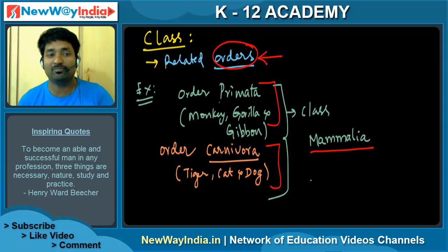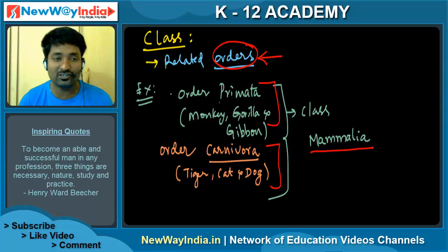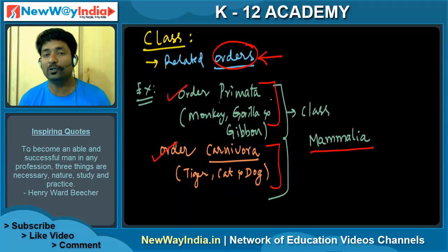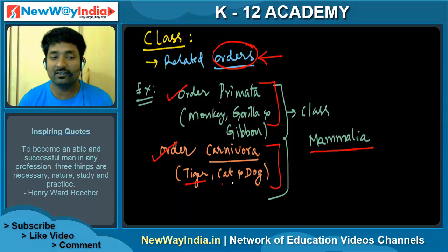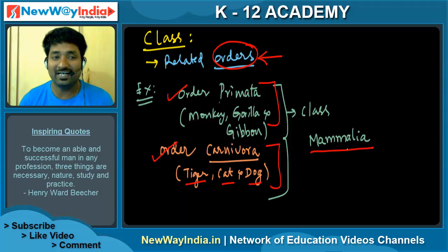To clarify: Primata includes primates, while Carnivora includes animals that eat flesh, such as dog, cat, and tiger. These are all different orders, but they are all placed under class Mammalia. That is the concept of class — it is a grouping of related orders.